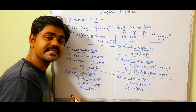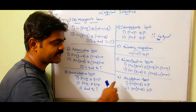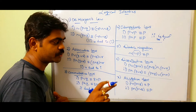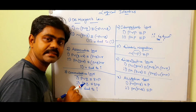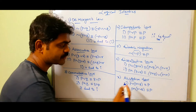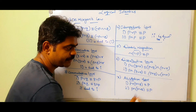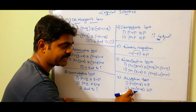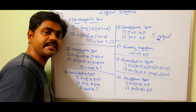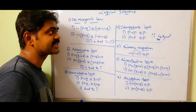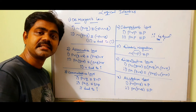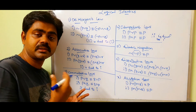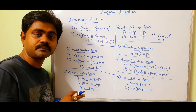The last one is absorption law. P OR (P AND Q) equals P. In its dual, OR is changed to AND: P AND (P OR Q) equals P. So these are the logical identities for checking whether they are dual to each other or not.